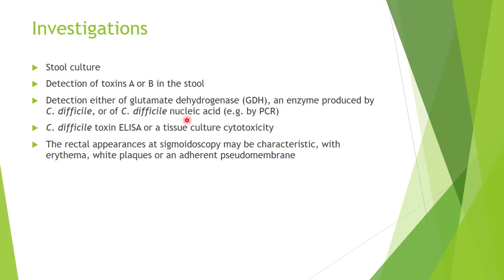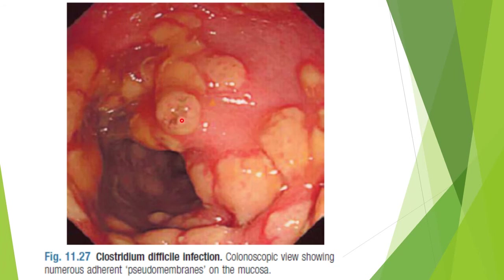Regarding rectal appearance, we can do sigmoidoscopy — inserting the sigmoidoscope through the rectum — and we can see characteristic features ranging from erythema, white plaques, or an adherent pseudomembrane. This is a picture of the colon during colonoscopy. In Clostridium difficile infection, we can see numerous adherent pseudomembranes — these white patches are the pseudomembranes.